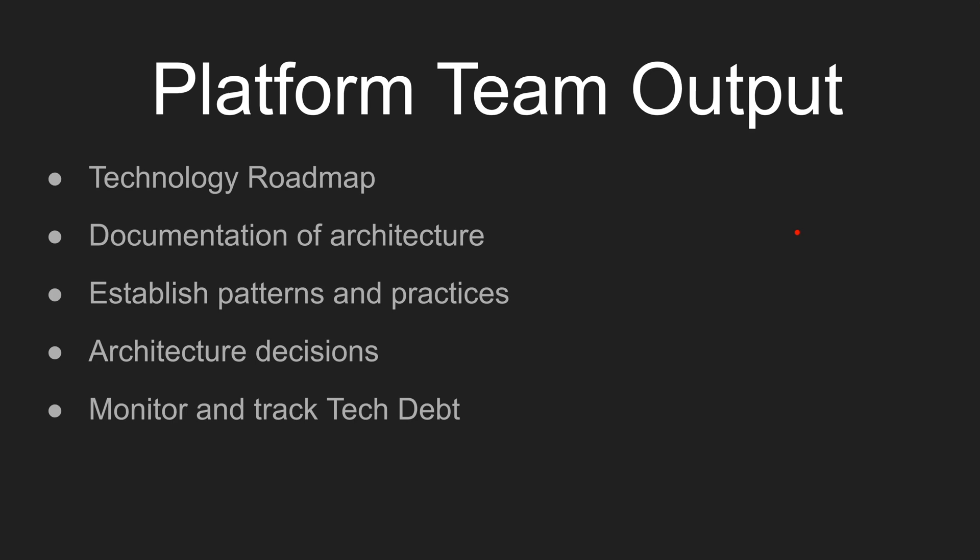Let's define what the platform team's output is. From your platform team, you're going to expect a technology roadmap, good documentation on the architecture that the build teams can use to understand how the system works. The platform team will also be responsible for establishing patterns and practices — how the code is structured and how different layers or services interact with each other. And lastly, the platform team is also a great place to monitor and track tech debt. More often than not, tech debt gets missed and pushed to the side, but with a platform team, you have a team that's responsible for making sure tech debt does get done.